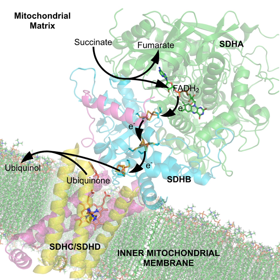Other cofactors were identified throughout the early 20th century, with ATP being isolated in 1929 by Karl Lohmann, and coenzyme A being discovered in 1945 by Fritz Albert Lipmann. This discovery was followed in the early 1940s by the work of Hermann Kalckar, who established the link between the oxidation of sugars and the generation of ATP. This confirmed the central role of ATP in energy transfer that had been proposed by Fritz Albert Lipmann in 1941. Later, in 1949, Morris Friedkin and Albert L. Lehninger proved that NAD+ linked metabolic pathways such as the citric acid cycle and the synthesis of ATP.